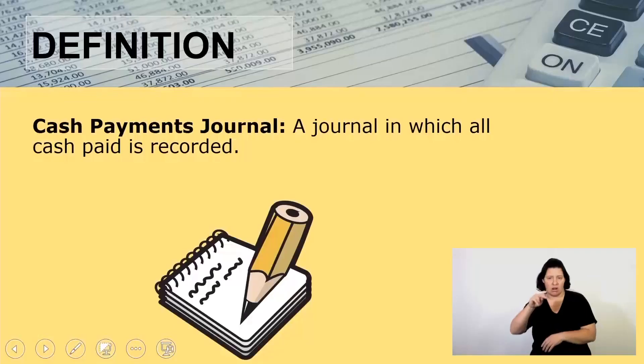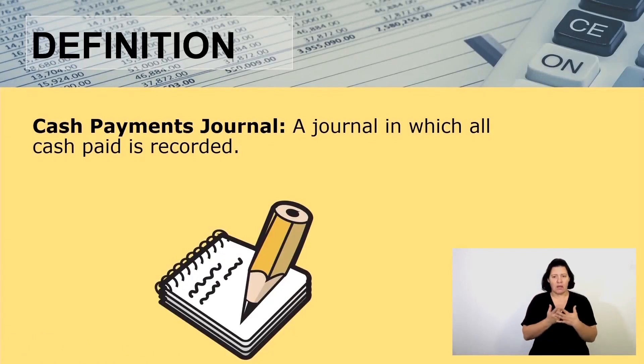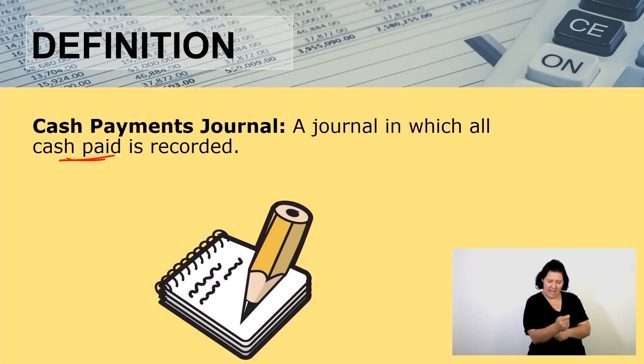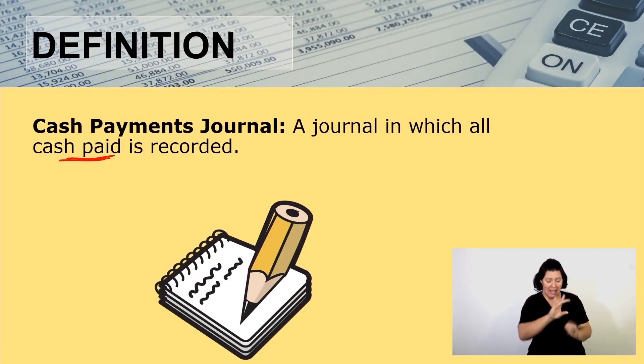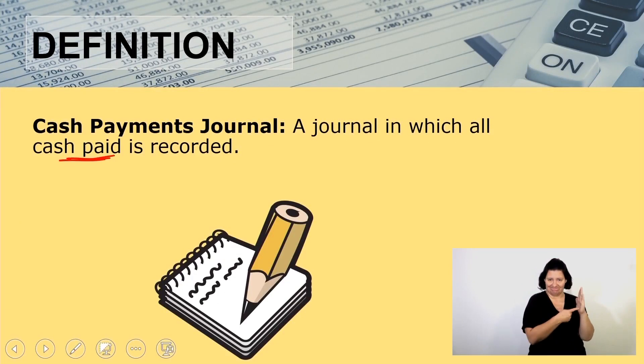Welcome back learners from the ad break. I want us to quickly define the cash payments journal. This is a journal in which all cash paid is recorded. So whenever cash is paid, it is recorded in the CPJ.